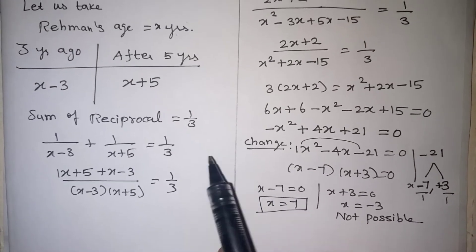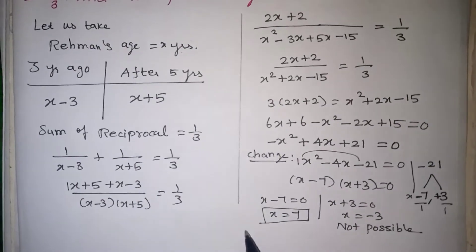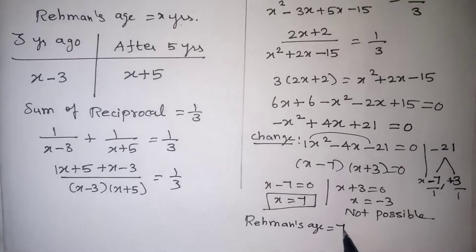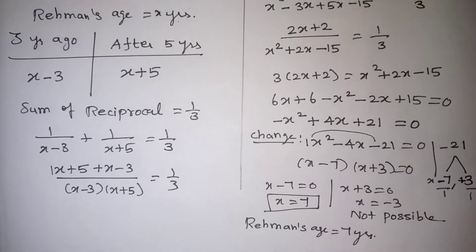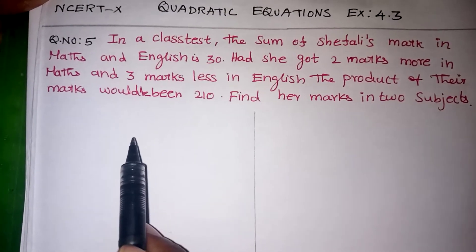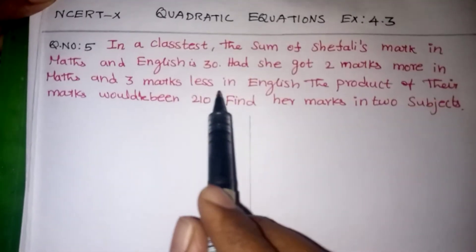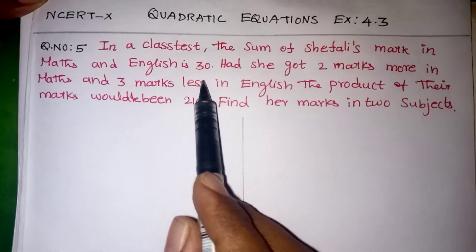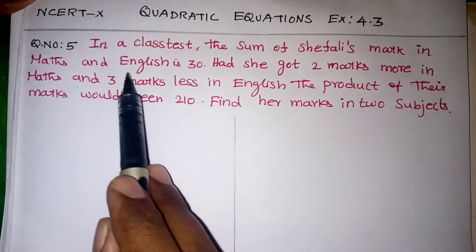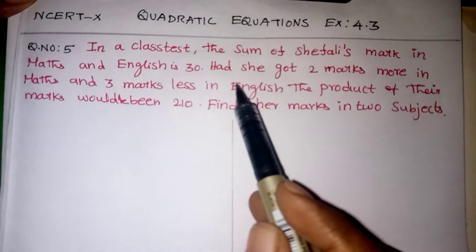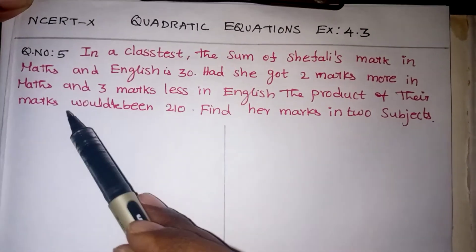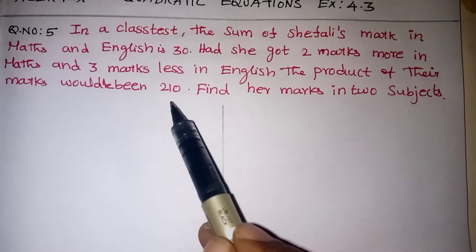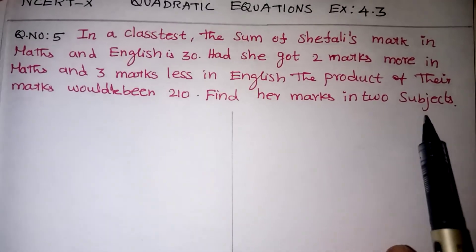X is nothing but what we assumed as Ragamond's age, so Ragamond's present age is 7 years. Now this is the fifth problem. In a class test, the sum of Shefali's marks in Maths and English is 30. Had she got two more marks in Maths and three less marks in English, the product of their marks would have been 210. Find her marks in the two subjects.